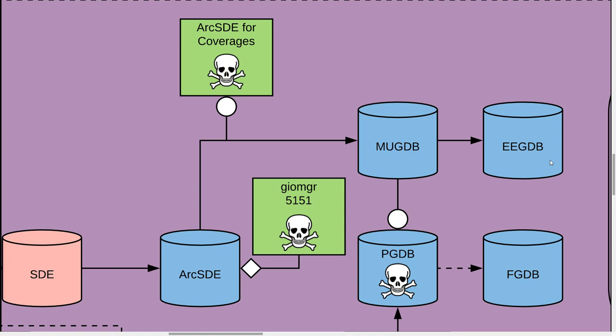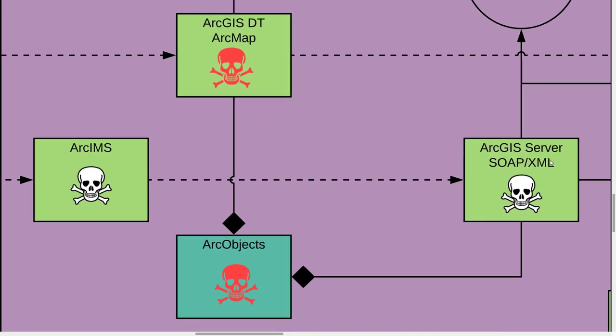Part of what showed up was something called the personal geodatabase — you might still find those if people are running ArcGIS 8 or 9. The personal geodatabase was an Access file, not very scalable in terms of size or stability. It gets replaced with the file geodatabase, and what you see a lot of today is file geodatabases. You can also see enterprise-enabled geodatabases in bigger organizations that have advanced or enterprise licensing.